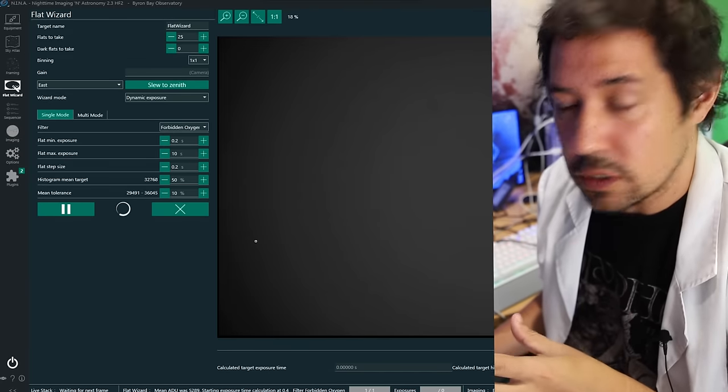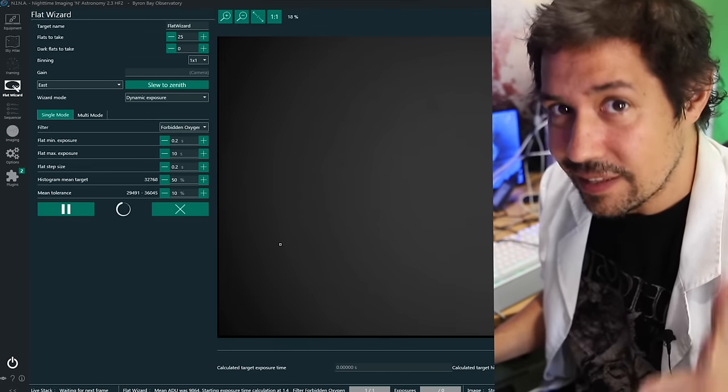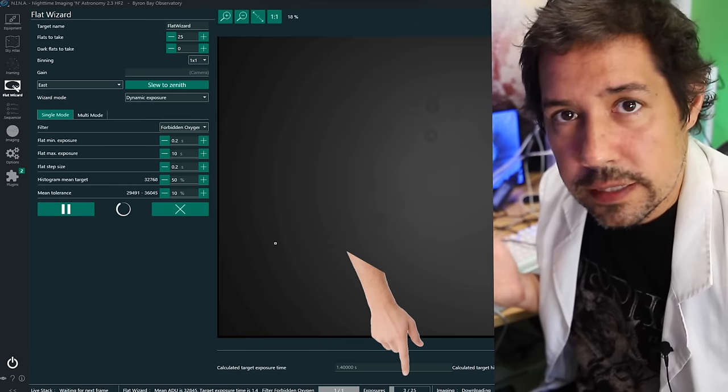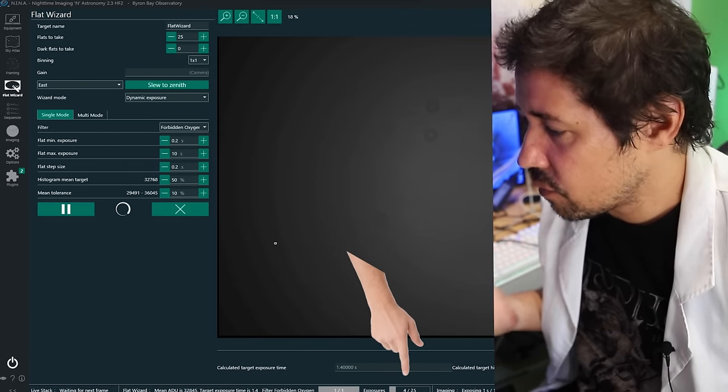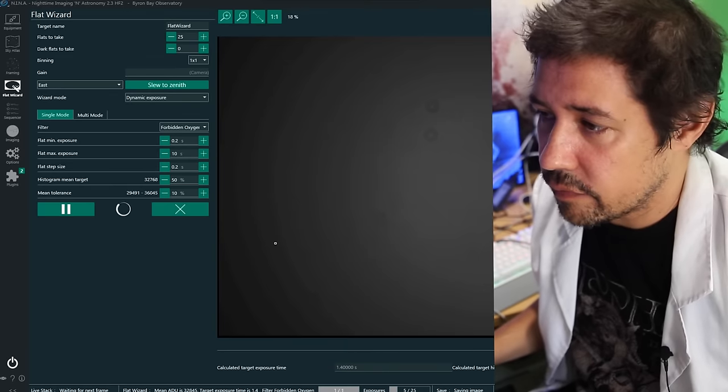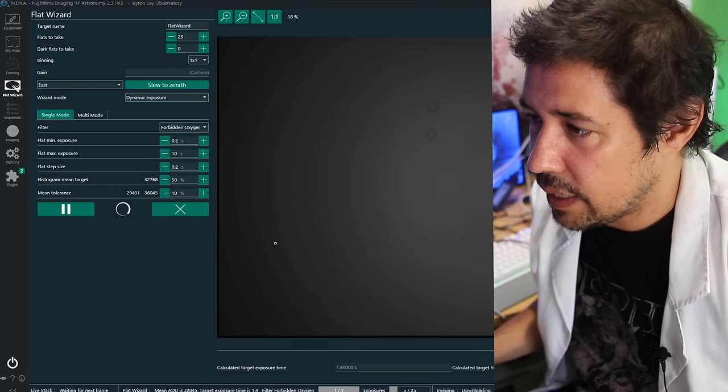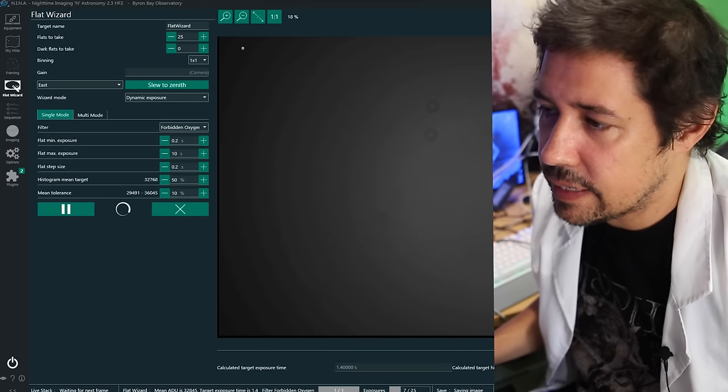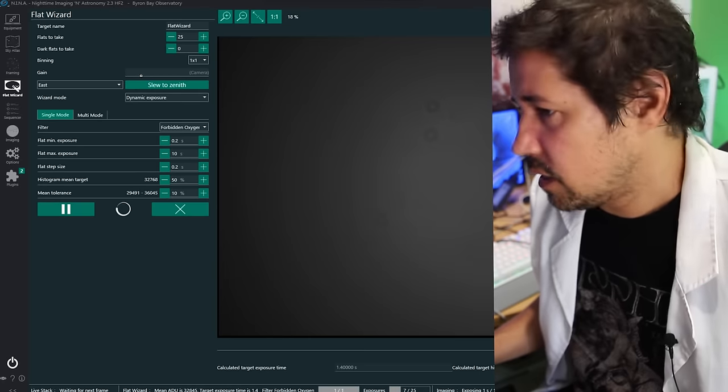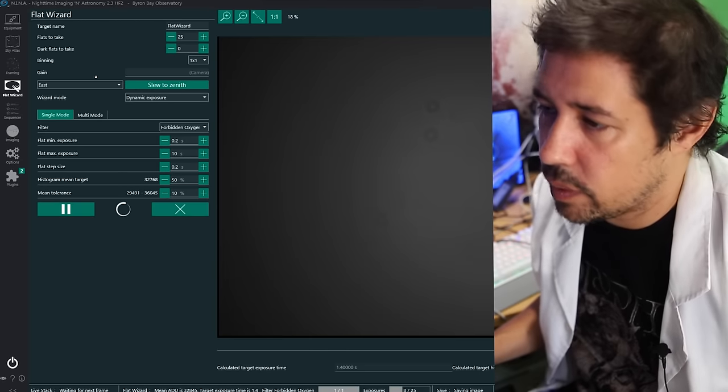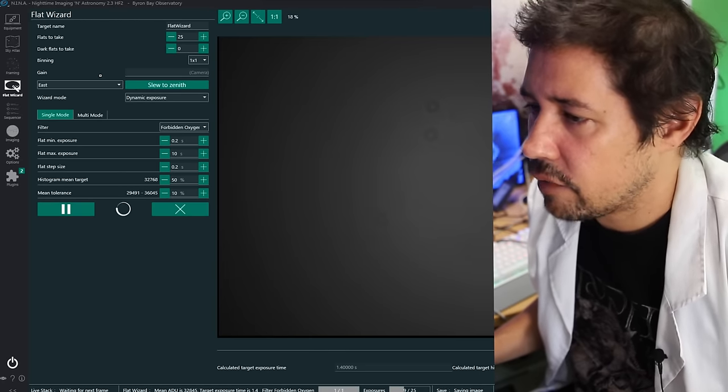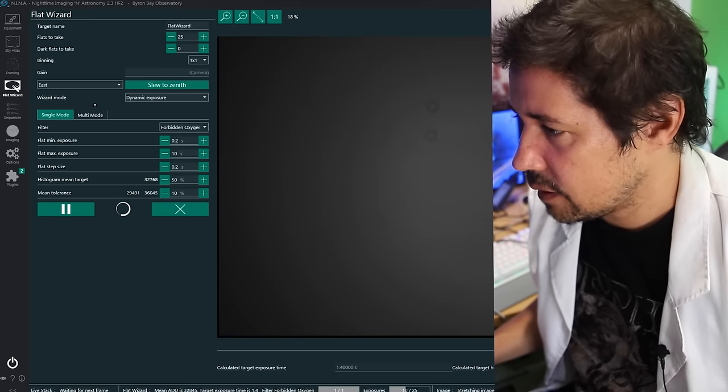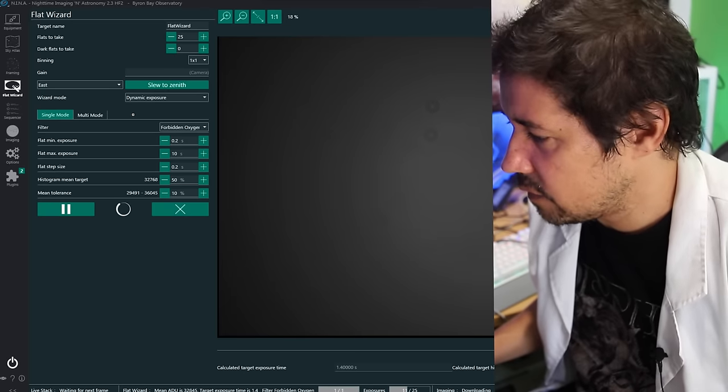You can see some dust motes, you can see the vignetting quite clearly. This is all this stuff that we're going to subtract. And there it goes. It already knows what the ideal exposure is, and now it's running through all the exposures and it's going to take 25 of them, which is what I set up here. It's got the same gain that the camera currently has now, which is the same that I was using last night. It's one by one binning, same as what I normally use. We don't have to slew or anything like that where I'm just leaving it pointed at the wall here. And I can speed this up with the magic of television.